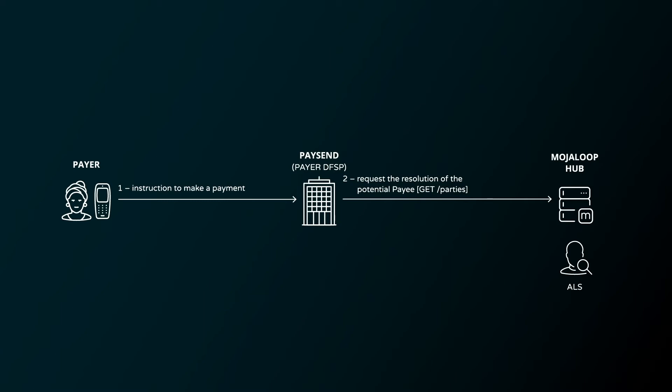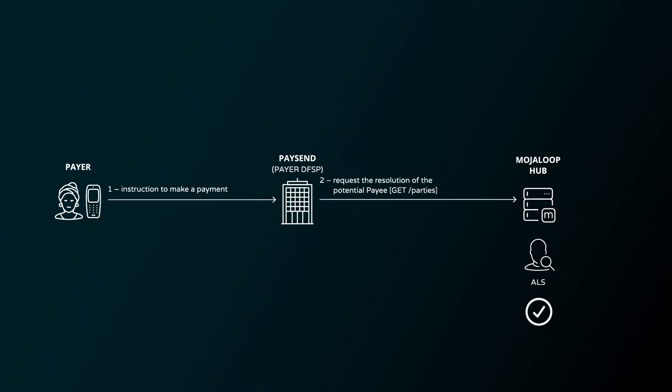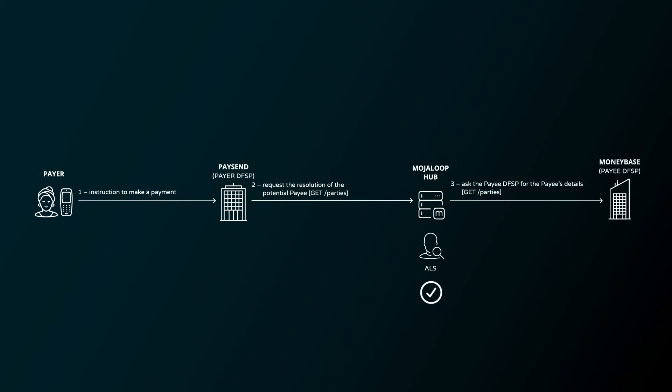The identifiers for both John and Gladys were registered with the relevant identity oracles by their respective DFSPs back when they originally signed up for their accounts. Since they are in the system, the identity oracle confirms that John's identifier has been registered by MoneyBase. The ALS then forwards the request to MoneyBase to provide further identifying data like his name and date of birth. MoneyBase sends that information back through the Mojaloop switch as a callback to PaySend.